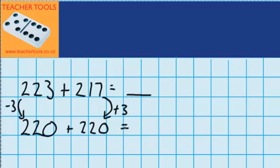220 plus 220, that's easy for me to solve. The answer to that is 440. So the answer to 223 plus 217 must be 440.